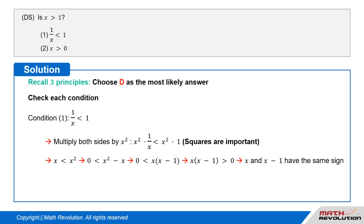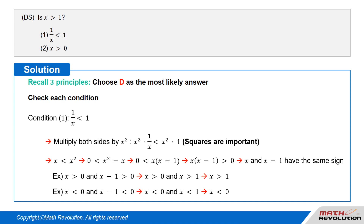That is, 0 is smaller than x times (x minus 1). Since x times (x minus 1) is greater than 0, the factors x and x minus 1 must have the same sign. Thus, either x is greater than 0 and x minus 1 is greater than 0, or x is smaller than 0 and x minus 1 is smaller than 0. This gives x is greater than 1, or x is smaller than 0.